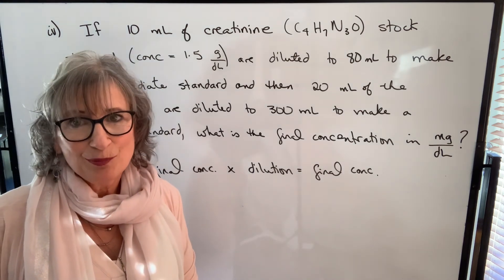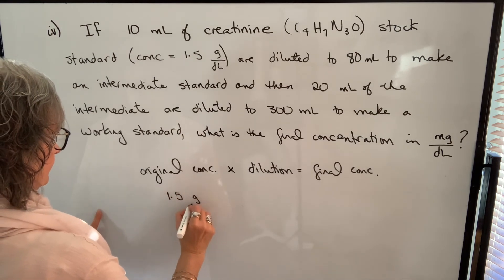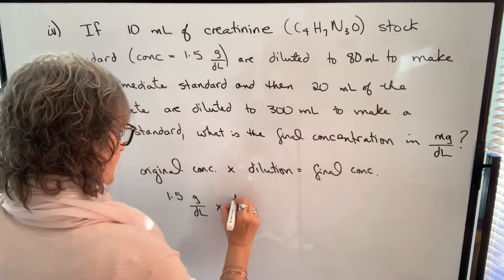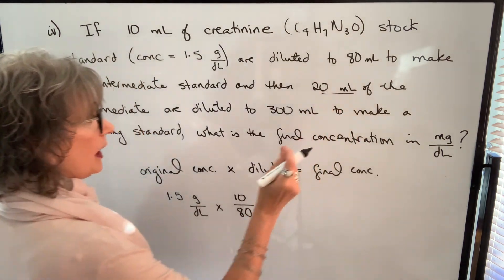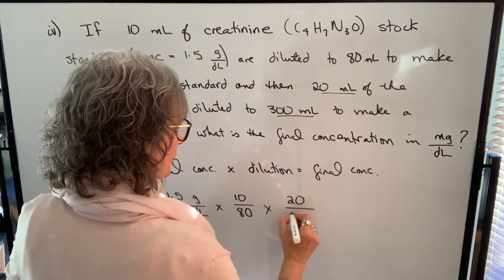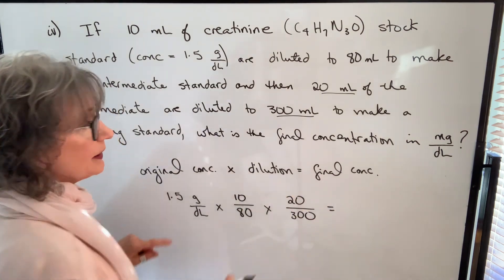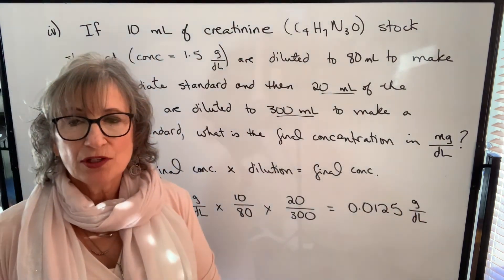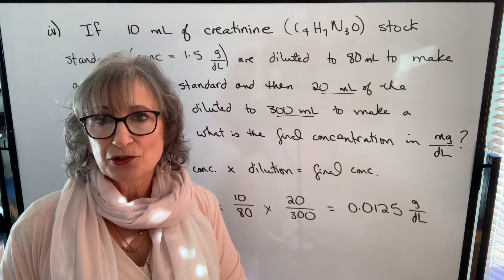Starting with 1.5 grams per deciliter, the first dilution factor is 10/80, and the second is 20/300. Multiplying 1.5 by (10/80) by (20/300) gives 0.0125 grams per deciliter — the concentration of the final working solution. We can reduce 10/80 to 1/8 and 20/300 to 1/15 to simplify. Converting to milligrams per deciliter using dimensional analysis: the result is 12.5 milligrams per deciliter.